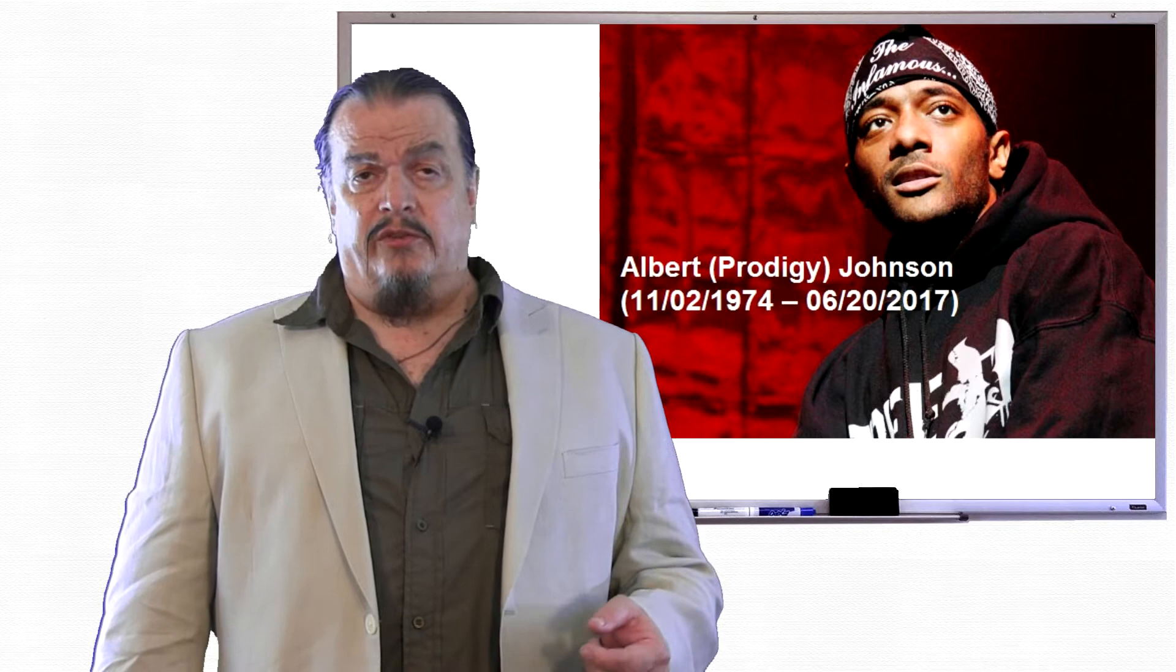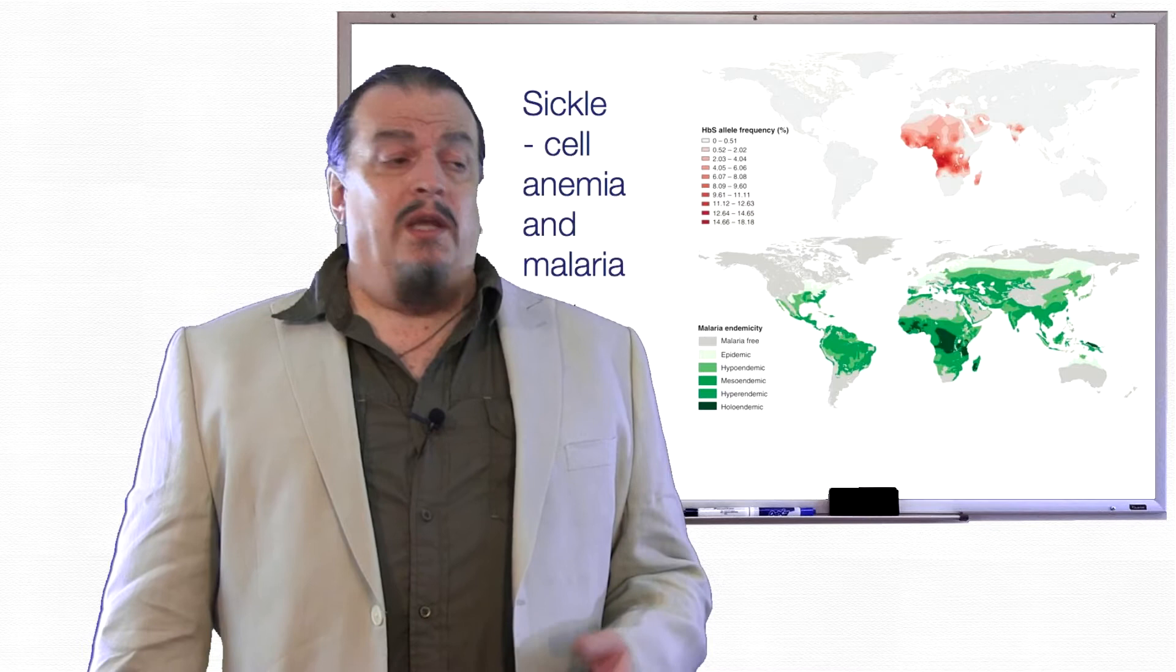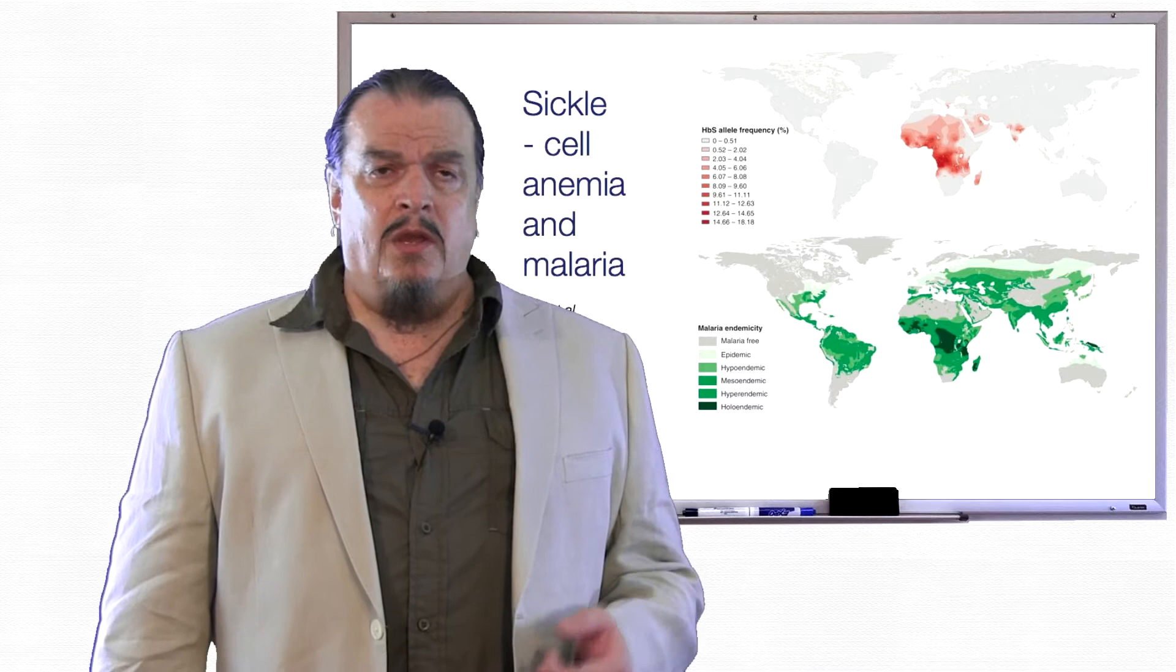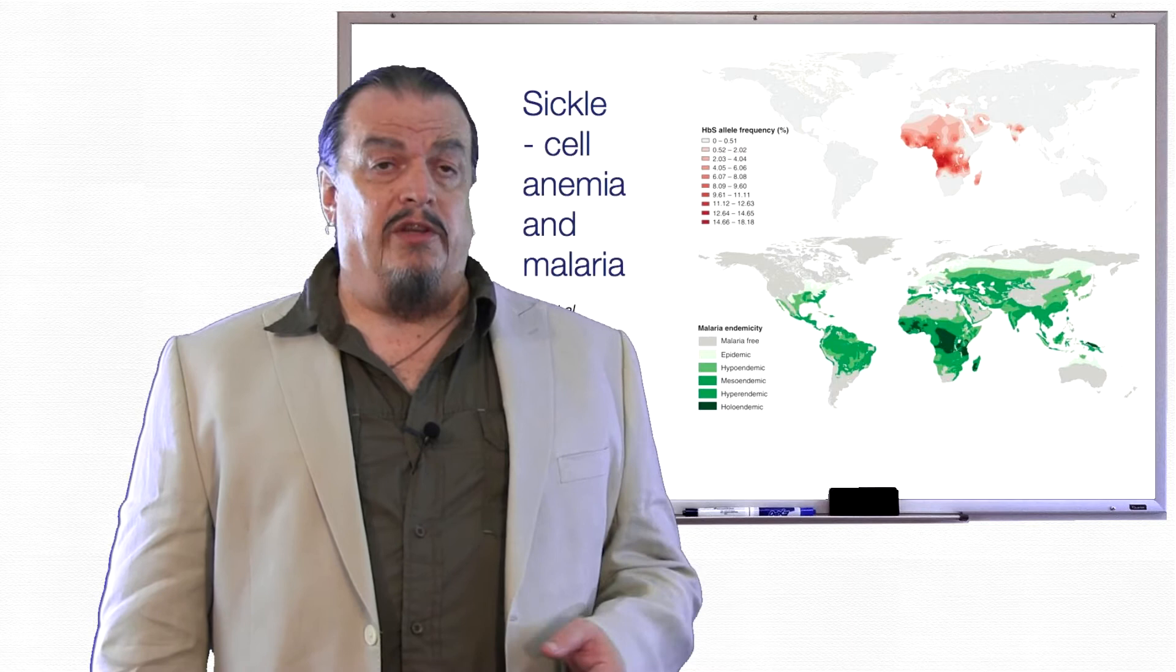Millions have the gene worldwide, but sickle cell anemia is more common in people with ancestry from tropical and subtropical climates like Africa and India. One in 12 African Americans have at least one copy of the gene, though you need two to have sickle cell anemia.